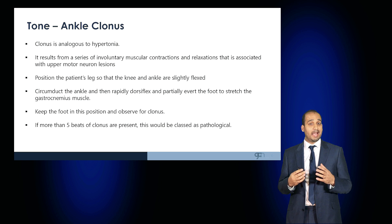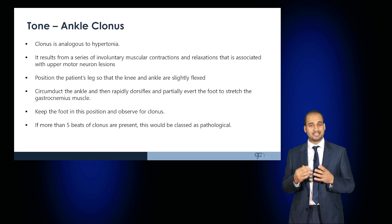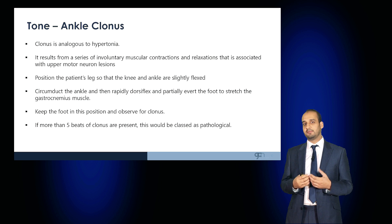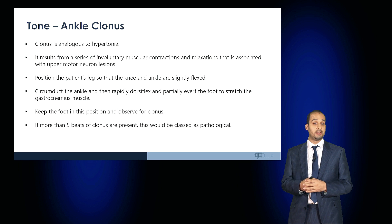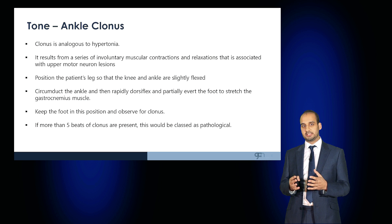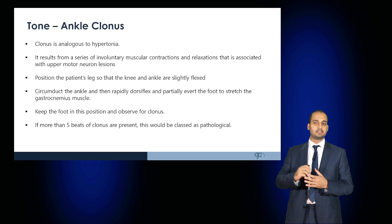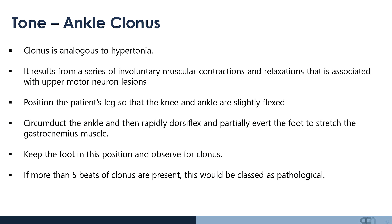Also examine for ankle clonus. Ankle clonus is analogous to hypertonia and results from a series of involuntary muscle contractions and relaxations associated with an upper motor neuron lesion. Position the patient's legs so that the knees and ankles are slightly flexed, circumduct the ankle, and then rapidly dorsiflex and partially evert the foot to stretch the gastrocnemius muscle. Keep the foot in this position and observe for clonus. Up to five beats of clonus is tolerable; beyond this is classified as pathological.